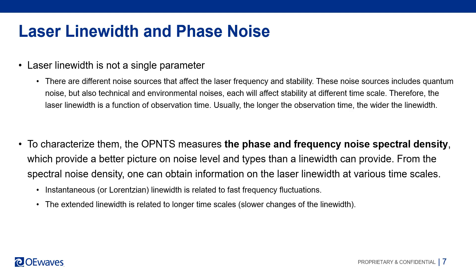From the spectral noise density, one can obtain information on the laser noise sources at different frequencies or time scales. And even more importantly, it helps the user to identify major noise sources and troubleshoot and reduce their effect on laser frequency noise. Moreover, the laser line width at different time scales can be calculated and estimated from the phase noise, allowing the user to get a complete understanding of the laser behavior.